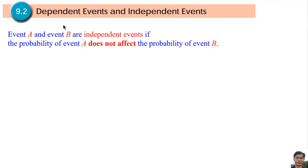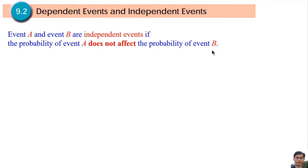Event A and Event B are Independent Events if the probability of Event A does not affect the probability of Event B. Event A and Event B are Dependent Events if the probability of Event A affects the probability of Event B.